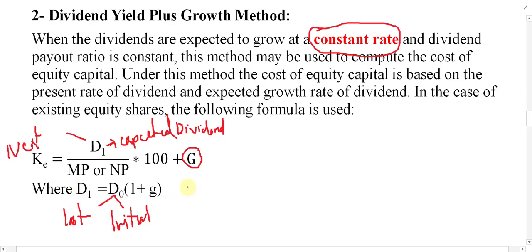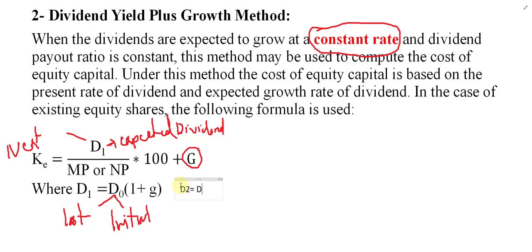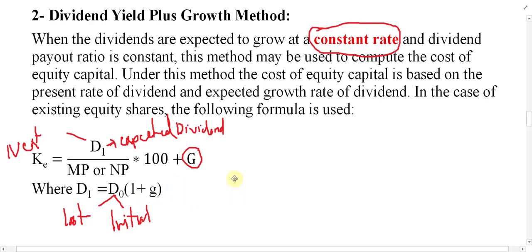Similarly, if we need D2, then D2 = D1 × (1 + G). And D3 = D2 × (1 + G). In this way you can apply the formula for any future dividend. But usually we need D1, so the key formula is: D1 = D0 × (1 + G).